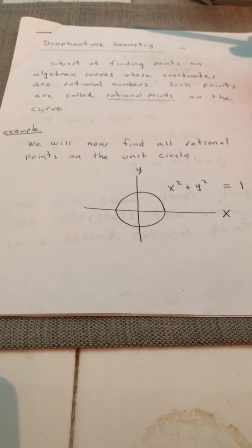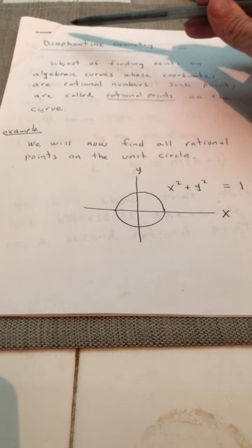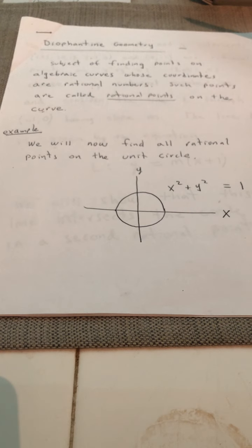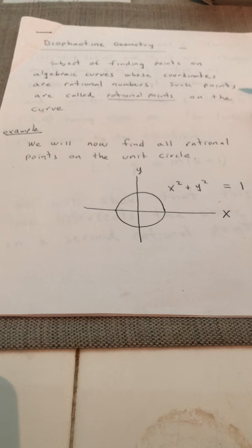We now want to look at an introduction to Diophantine geometry, which is the subject of finding points on algebraic curves whose coordinates are rational numbers. Such points are called rational points on the curve.